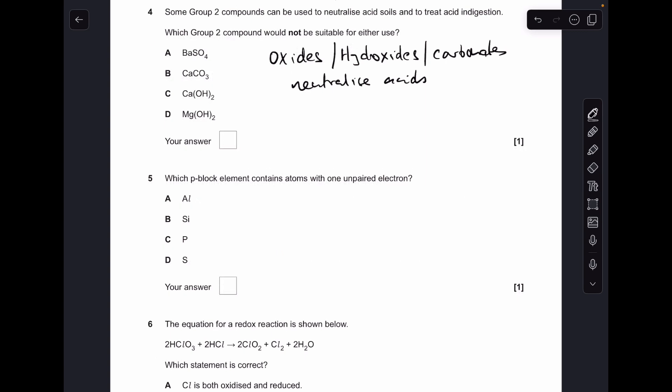Number four: the thing to remember here is that oxides, hydroxides, and carbonates neutralize acids. Barium sulfate is none of those, so that is the answer. Number five, nice and easy: aluminum's got a P1 configuration, so it's going to have one unpaired electron.